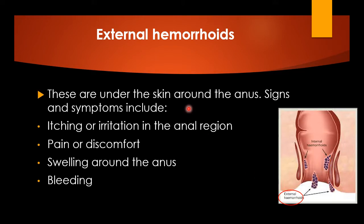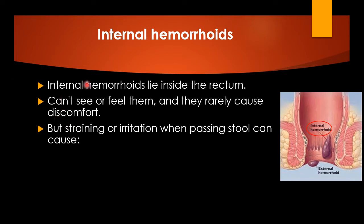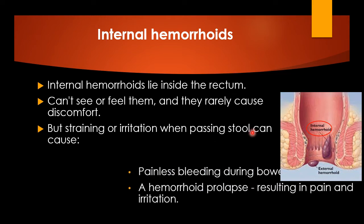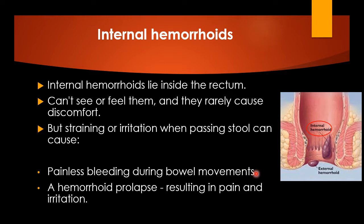External hemorrhoids are under the skin around the anus. Signs and symptoms include itching or irritation in the anal region, pain or discomfort, swelling around the anus, and bleeding. Internal hemorrhoids, on the other hand, lie inside the rectum so you cannot really see or feel them, and they rarely cause discomfort. However, straining when passing stool can cause painless bleeding during bowel movements — the most classic symptom. This can also lead to hemorrhoid prolapse, resulting in pain and irritation in the anorectal region.